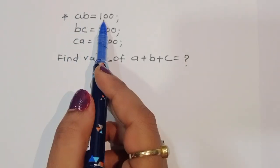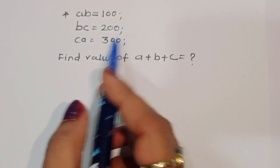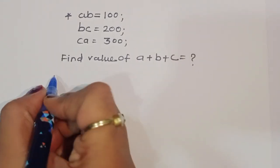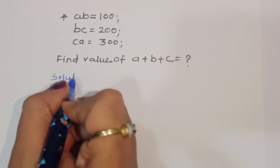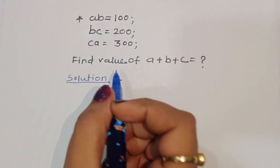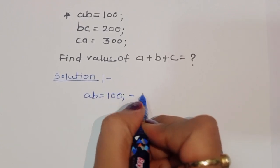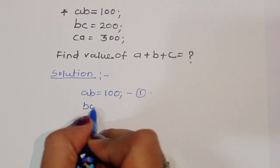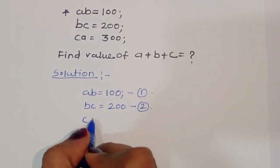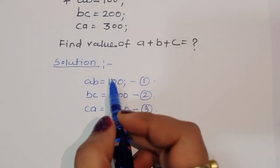The question is: given AB is equal to 100, BC is equal to 200, CA is equal to 300, we have to find out the value of A plus B plus C. Let's see how we can do this. Solution: first, what is given — AB is equal to 100 (equation 1), BC is equal to 200 (equation 2), CA is equal to 300 (equation 3). Now we have three equations.